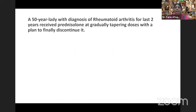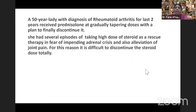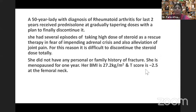Let me start with a report of one of my patients — a case scenario of a 50-year-old lady diagnosed with rheumatoid arthritis for the last two years, who is receiving prednisolone in gradually tapering doses with a plan to finally discontinue it. Due to recurrent episodes of pain and bearing a steroid card in fear of rescue therapy for adrenal crisis, she is taking several high doses of steroid. She did not have any personal or family history of fracture, and she has been menopausal for one year.